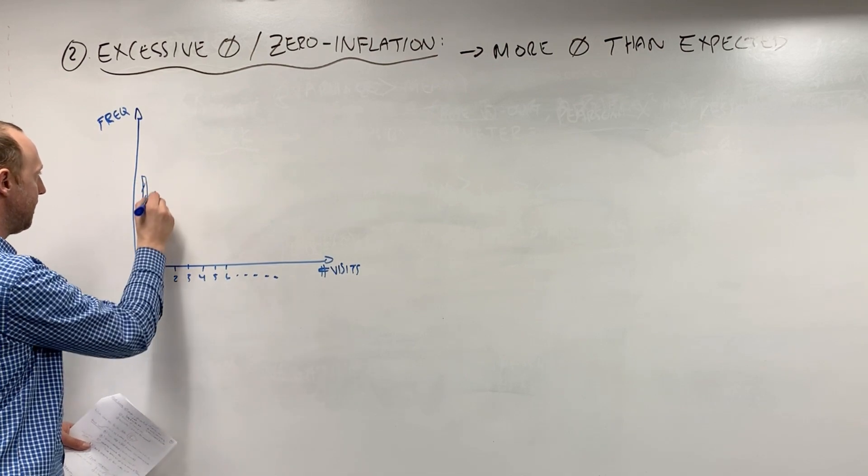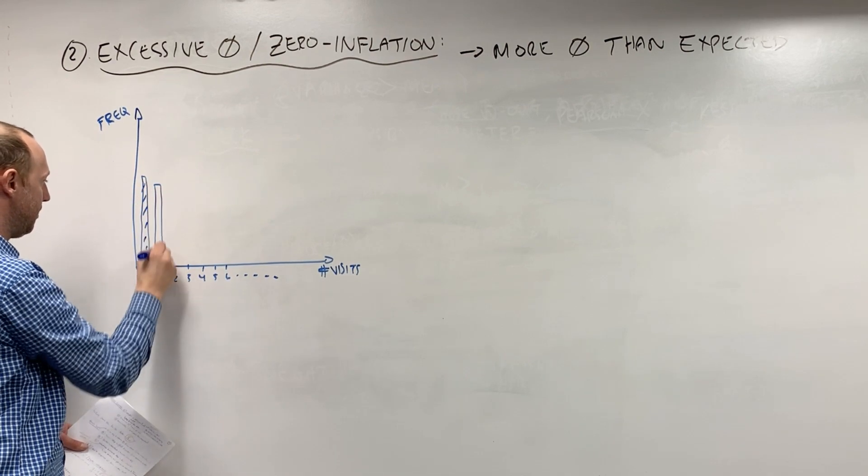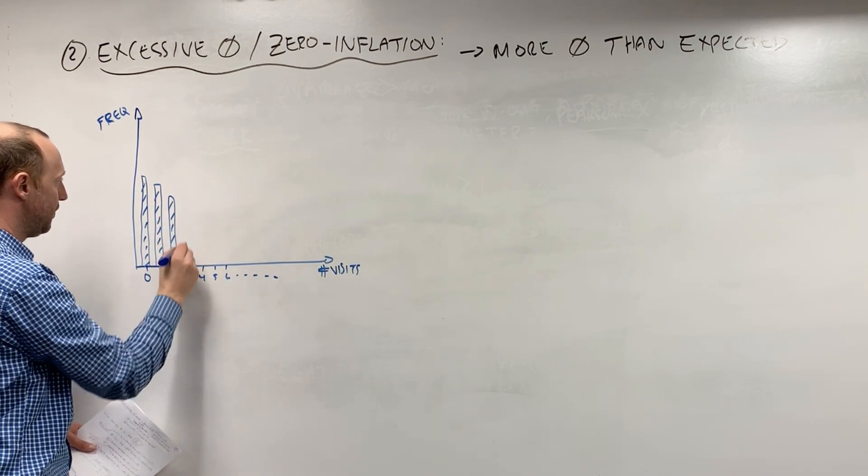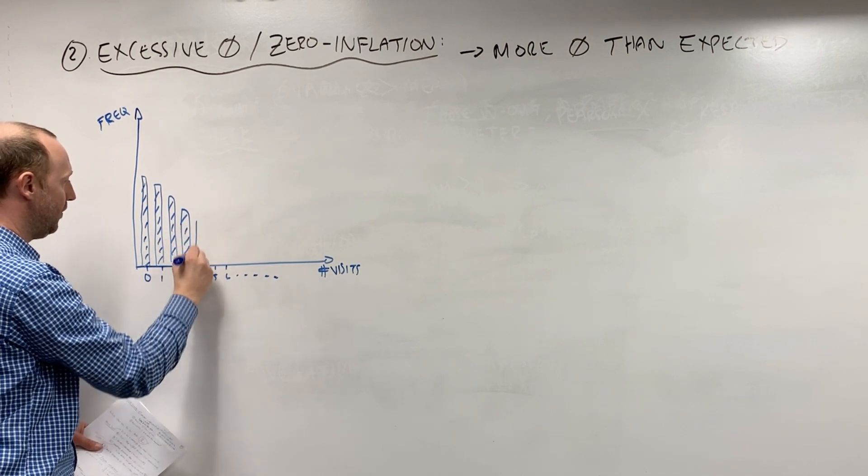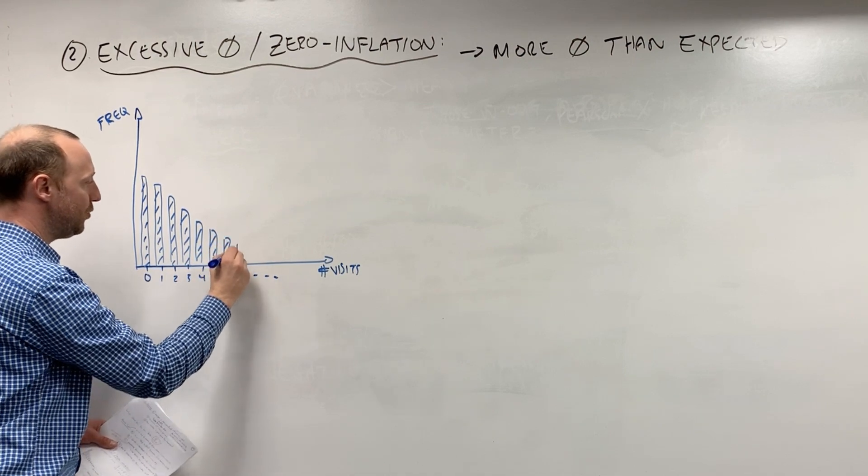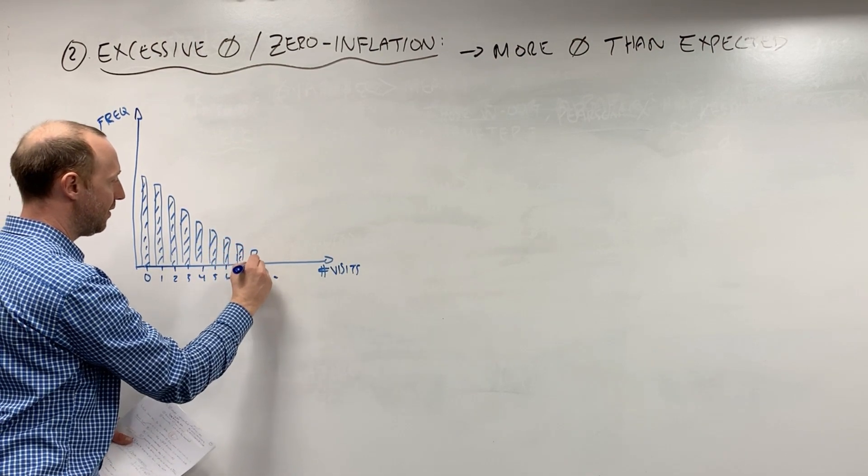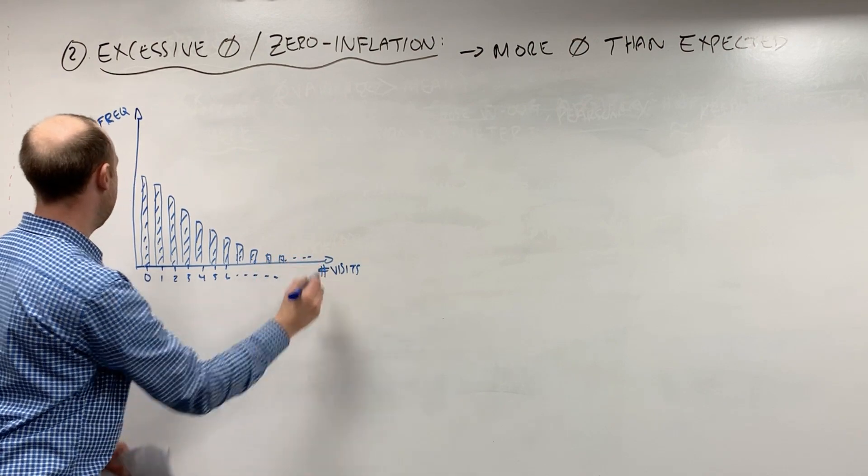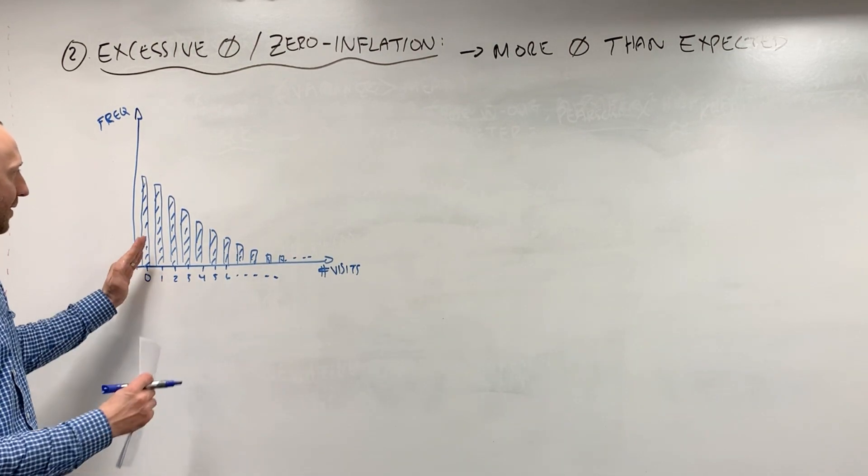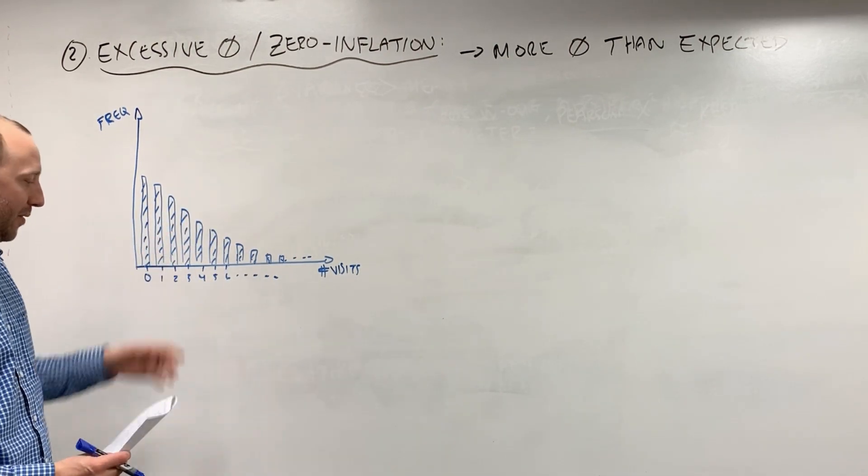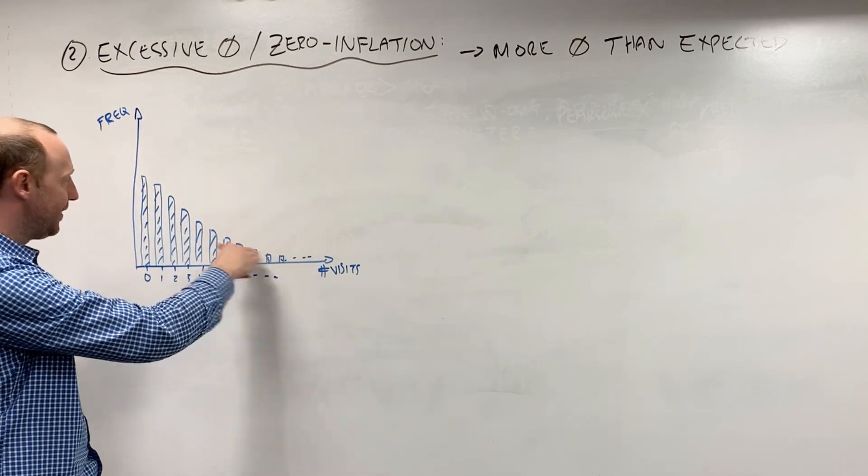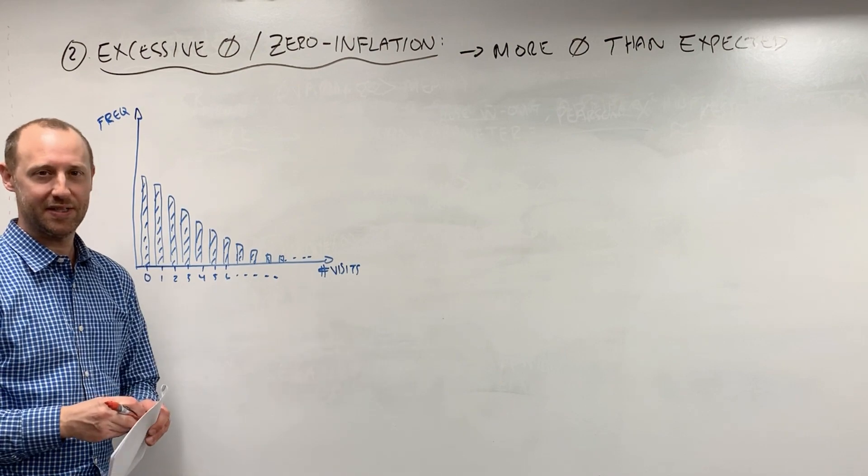Some zeros, some ones, two, three, four, and so on. So nice, smooth-ish looking peaking distribution. It doesn't necessarily need to peak at zero. It can have its peak somewhere else. But here, this is like a nice smooth shape that we expect to see.